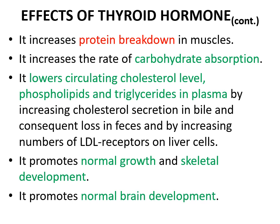Thyroid hormone lowers circulating cholesterol, phospholipids, and triglycerides in plasma by increasing cholesterol secretion in bile with consequent loss in feces, and by increasing the number of LDL receptors on liver cells, leading to rapid removal of LDL from plasma by the liver and subsequent secretion of cholesterol in lipoproteins.